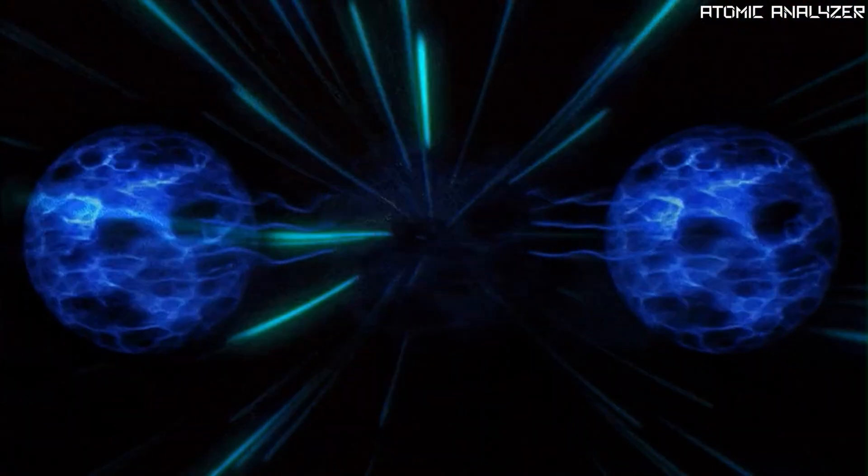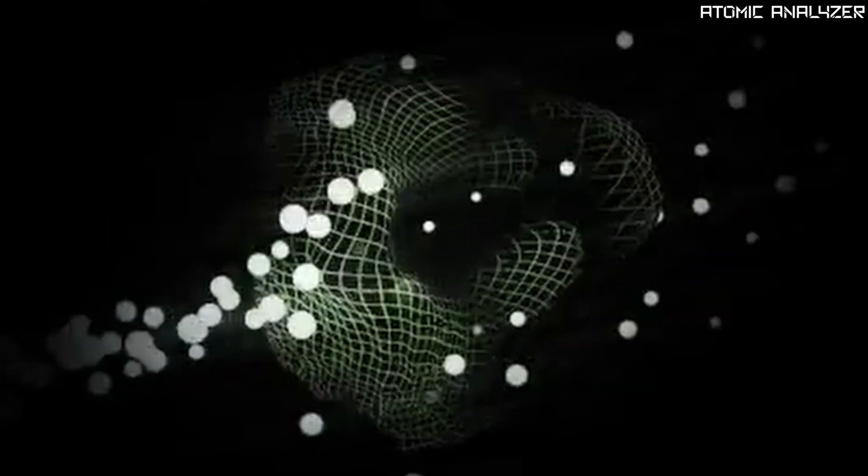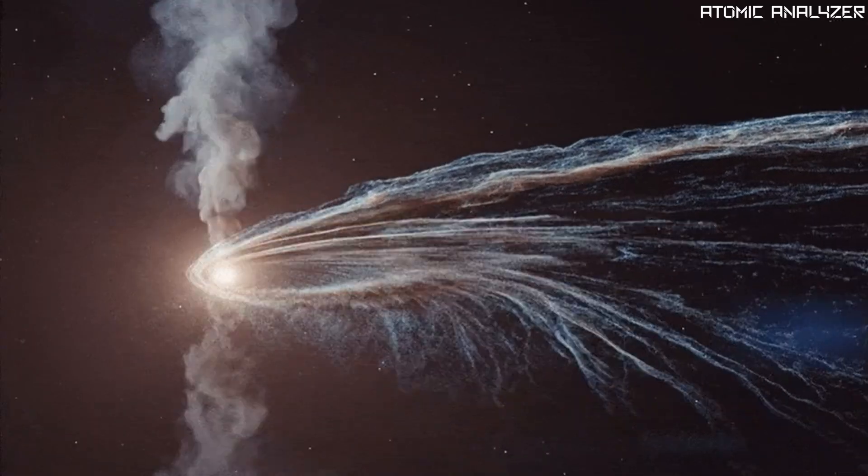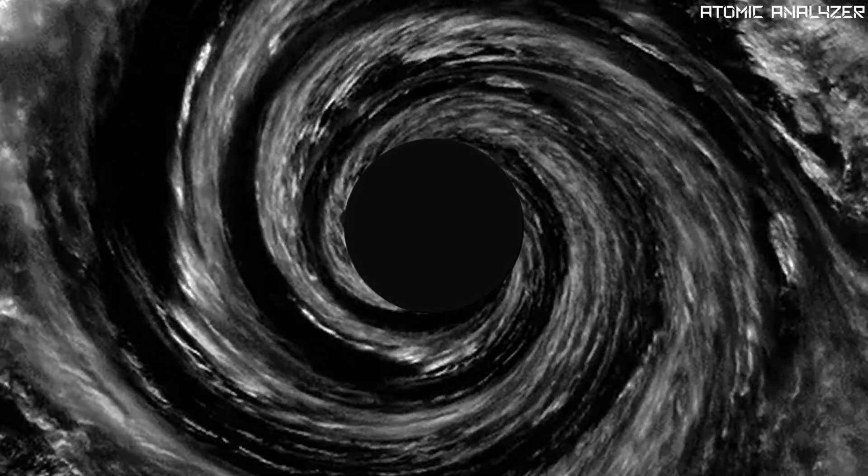If the particle approached the event horizon, it would not be able to cross it, sending the energy of the system skyrocketing. Eventually, the particle would have so much energy that it would trigger the collapse of the white hole into a black hole, ending its existence.